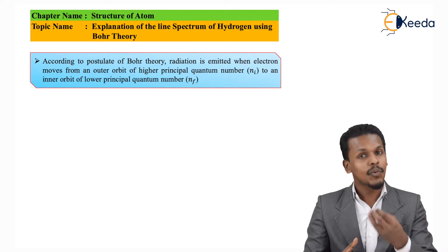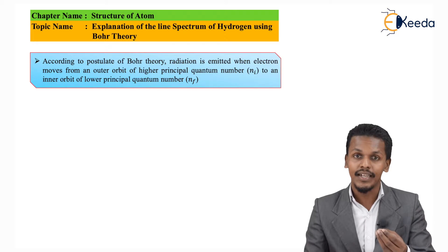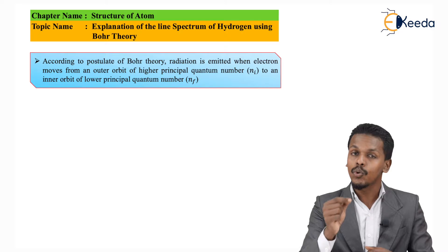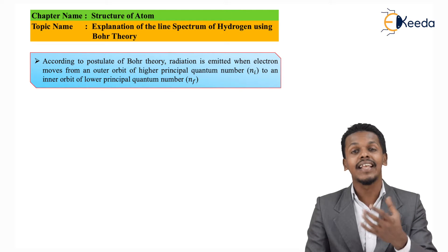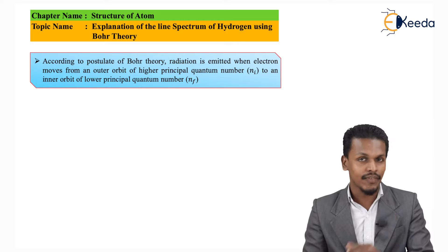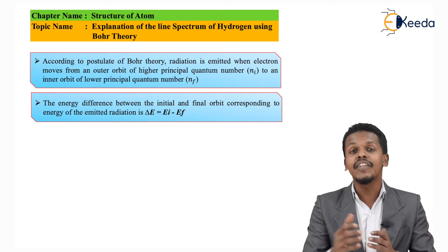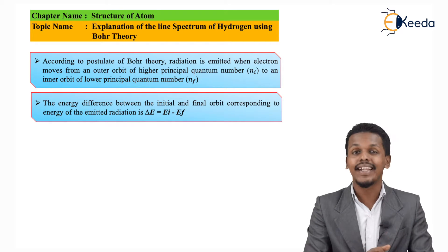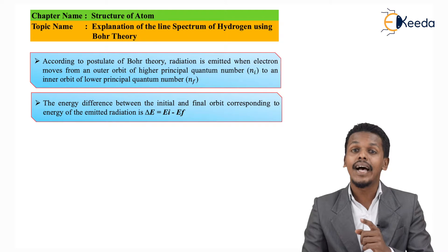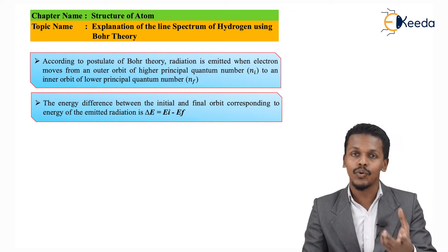Suppose the electron is present in a higher orbit — the orbit having a higher quantum number — let us name it Ni. And suppose the electron jumps from that higher orbit to a lower orbit, the one with a smaller or lower quantum number, which we consider as Nf. Whenever the electron jumps from Ni to Nf, it will emit energy, and the energy difference between these two orbitals is denoted by delta E, where delta E equals Ni minus Nf — that is, the energy gap between the higher and lower orbital.